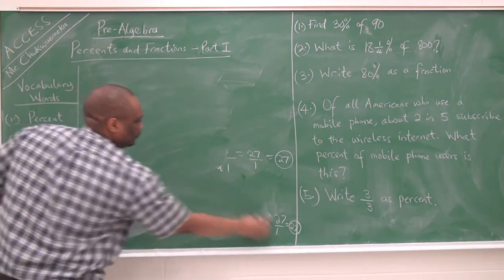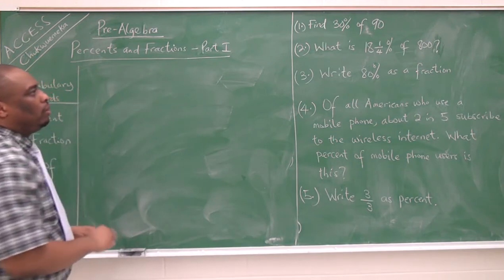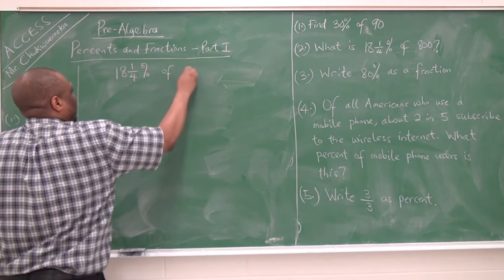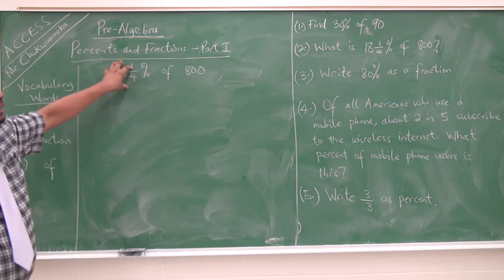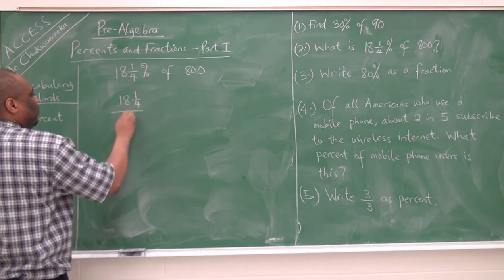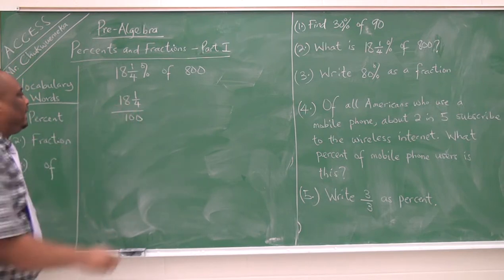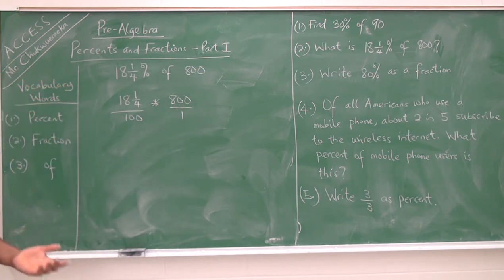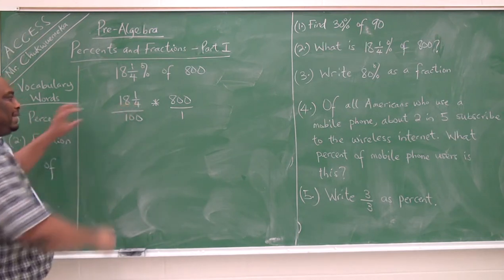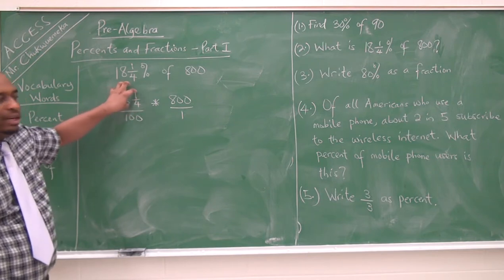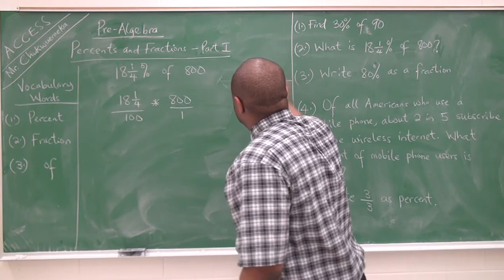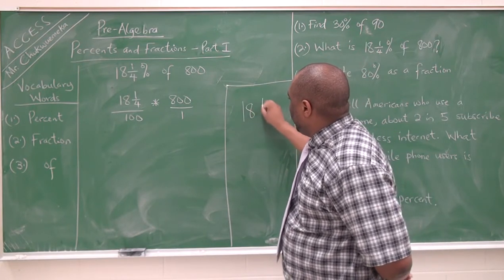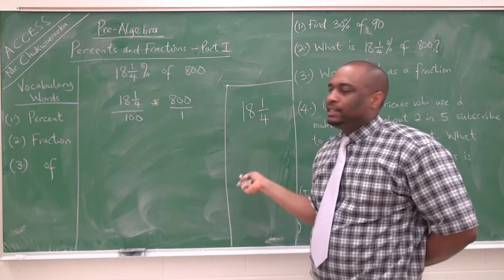Number 2: What is 18 and one-quarter percent of 800? So we have 18 and 1/4 percent of 800. This means 18 and 1/4 divided by 100, and the 'of' means times 800. You can write 800 over 1. Let's deal with this mixed number first — we need to convert it to an improper fraction.